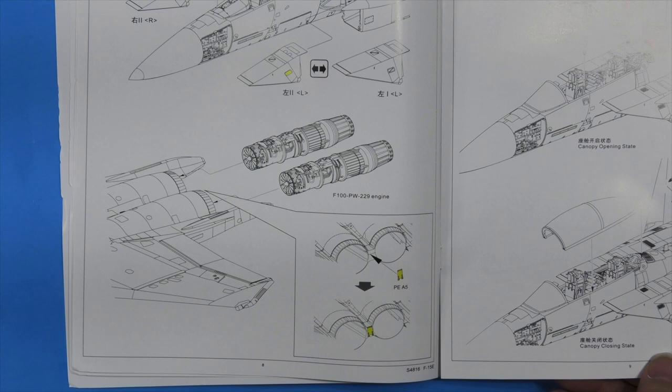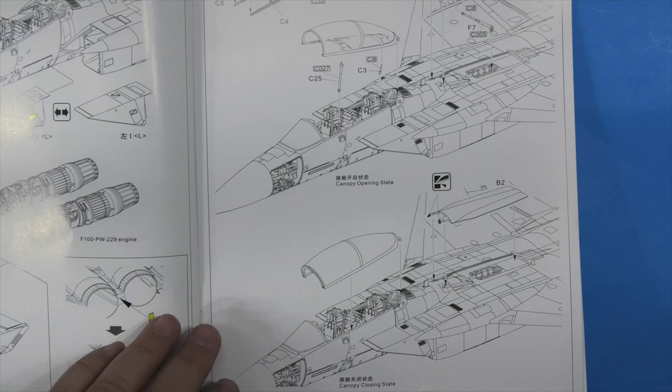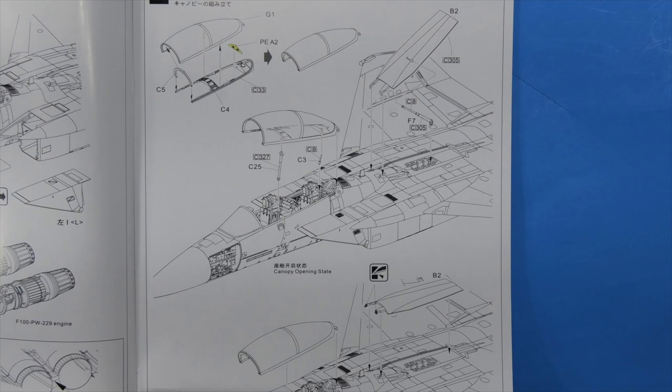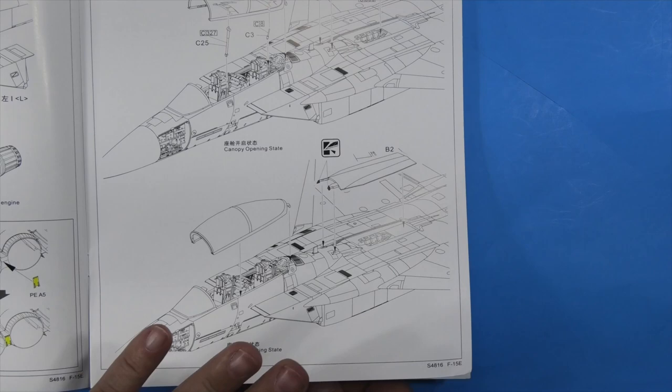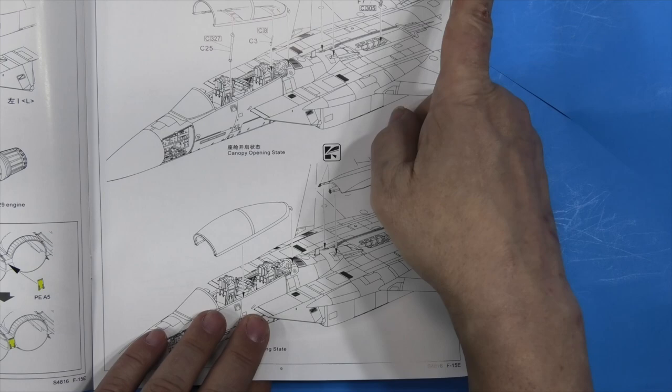There is some more PE going on. There is your choice of whichever one you are going to use. Engine is going in. So if you want to display them, you are going to have to look at online for how the panels open, or I suppose you could just leave one out and sit it beside it. There is not a stand it doesn't look like. Canopy open or closed your choice. Speed brake open or closed your choice. And it does not look like you are putting anything in the speed brake, so you have to clear up all those ejector pin marks that I showed you.